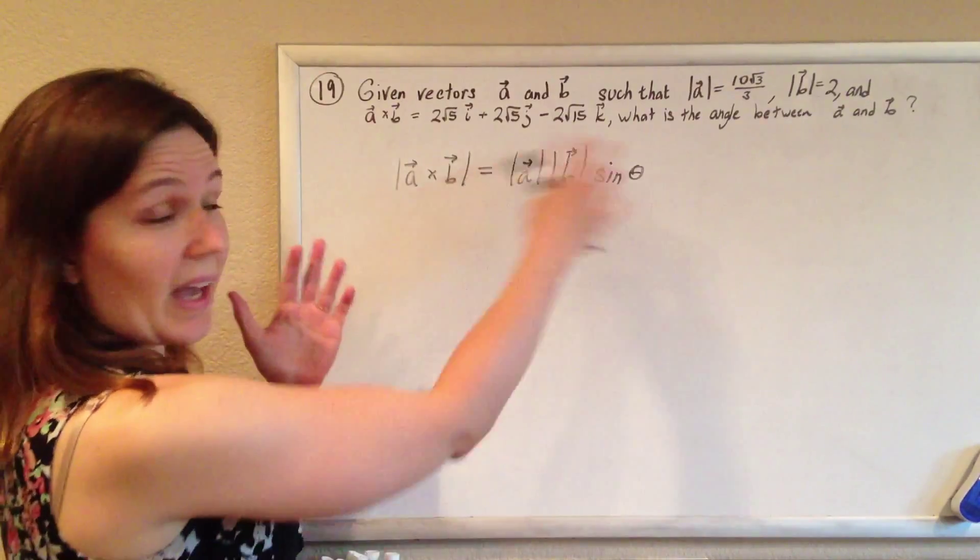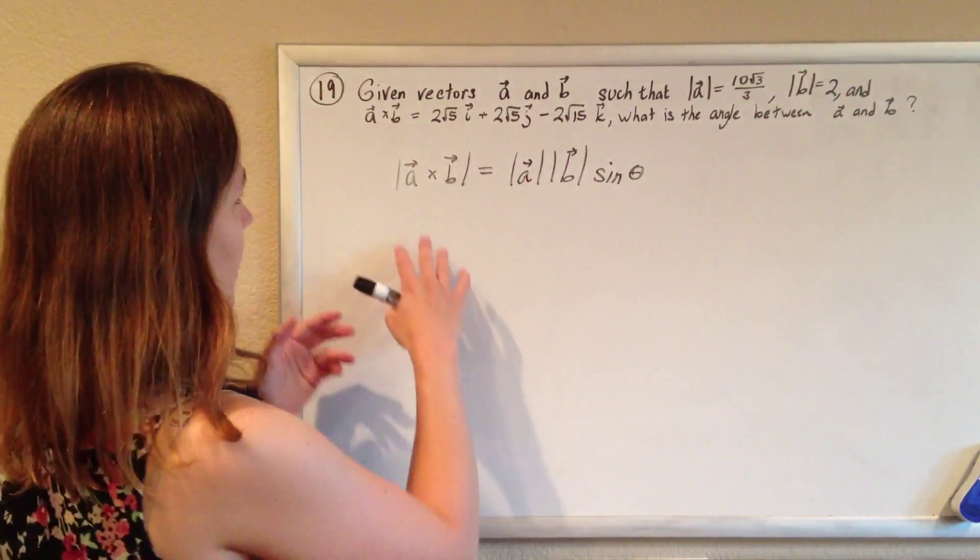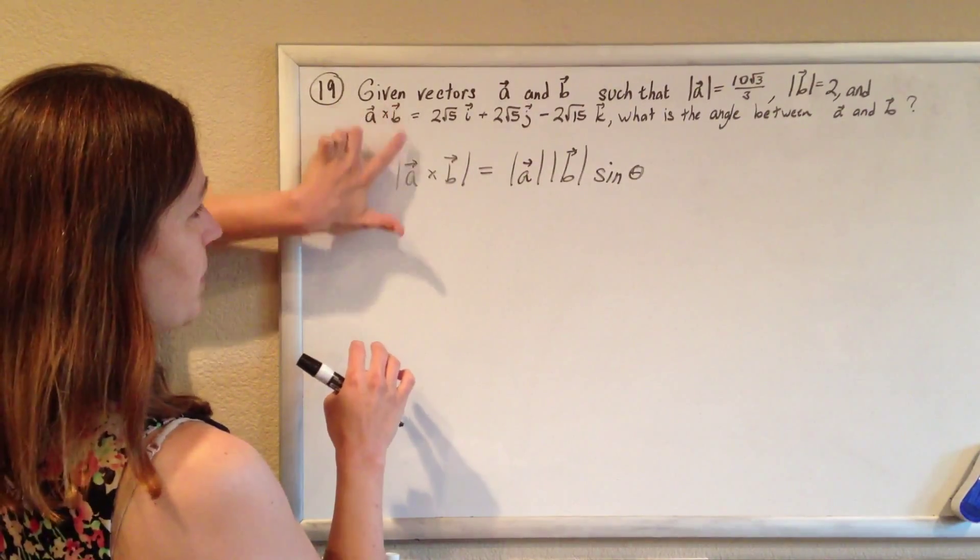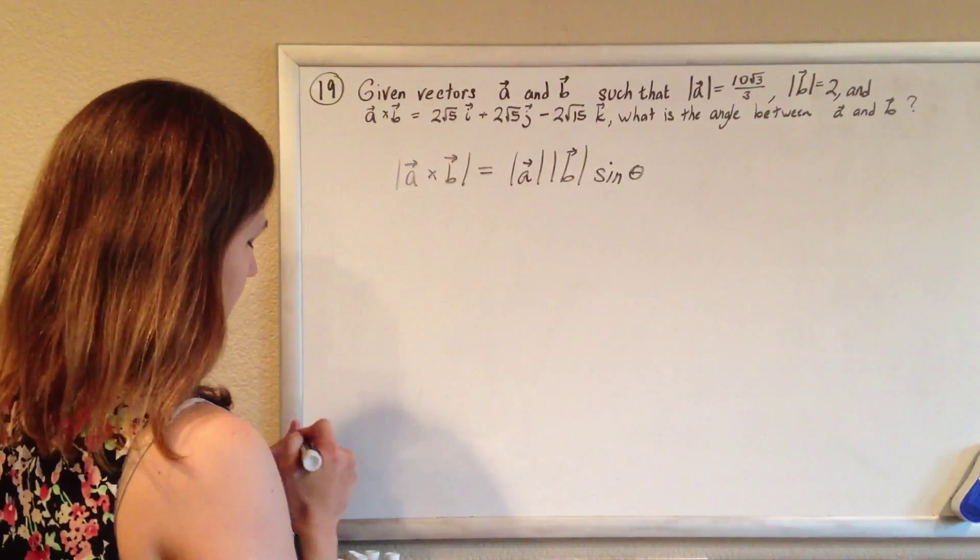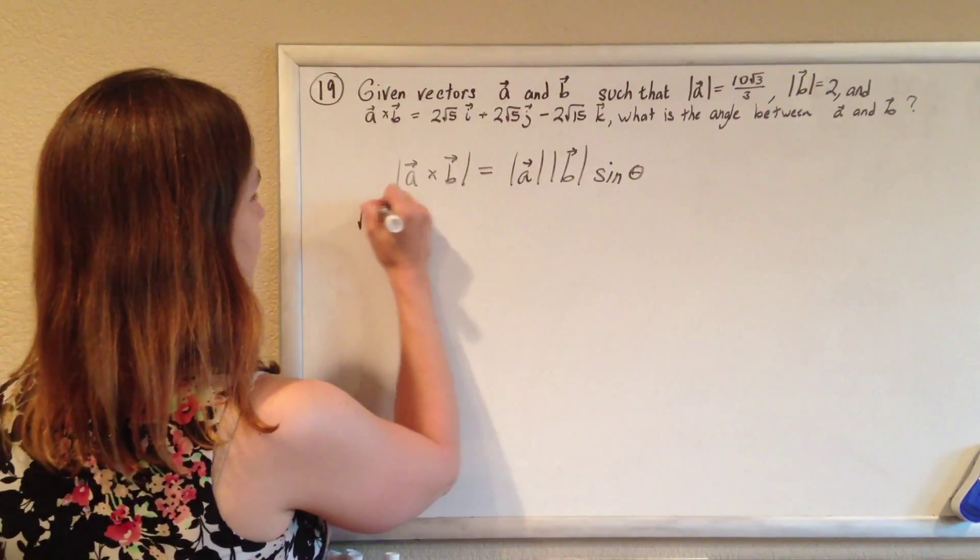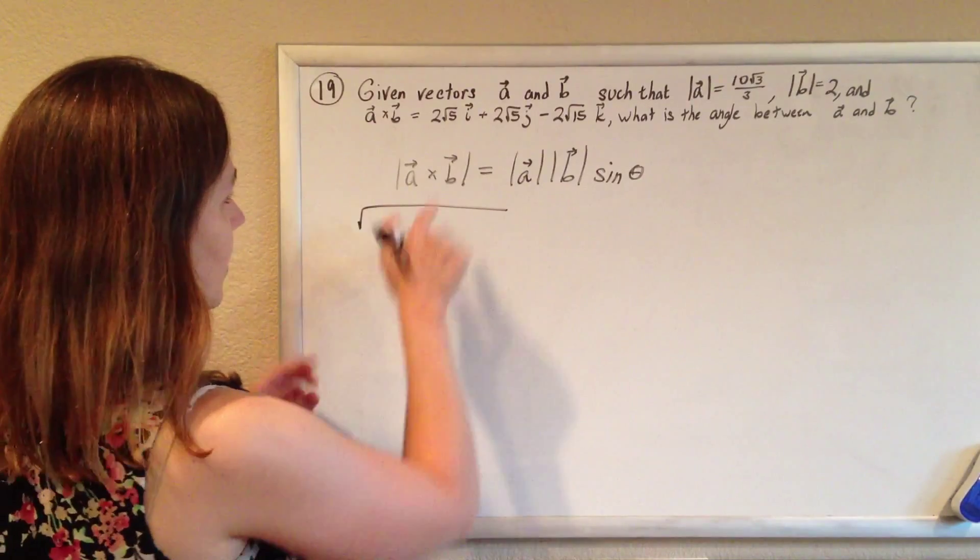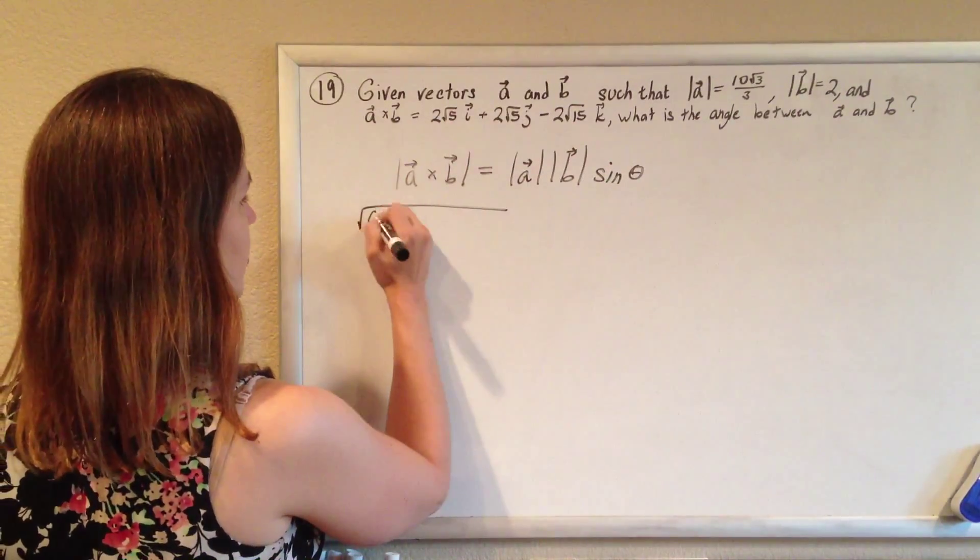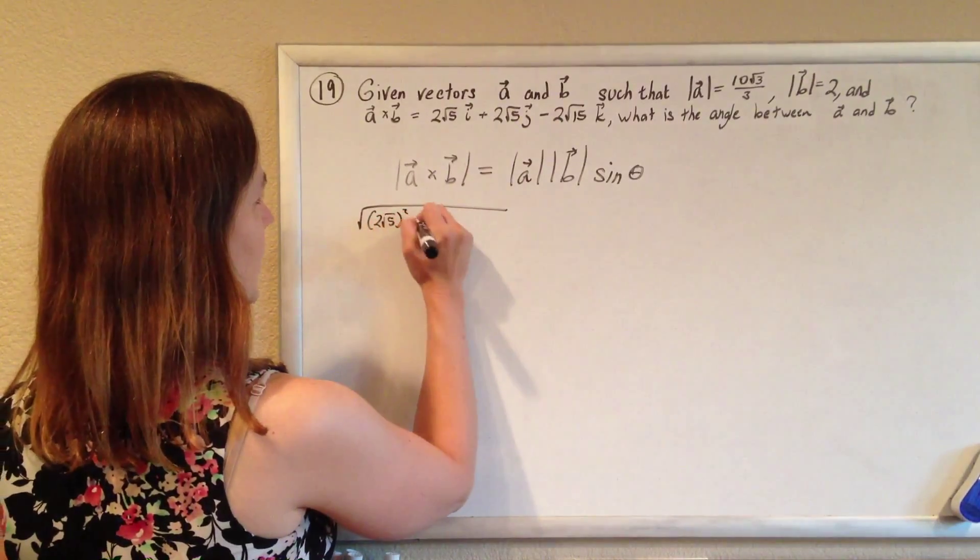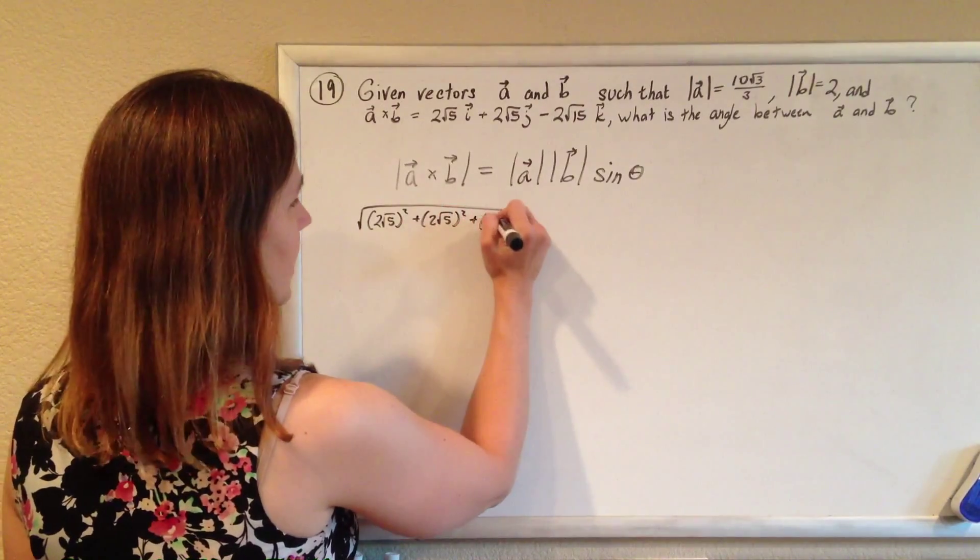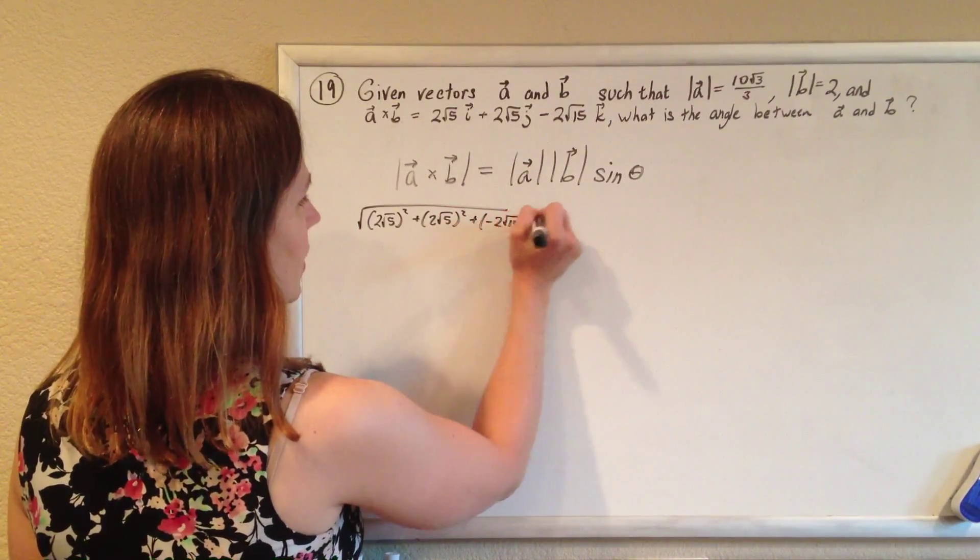Wonderful! We have all of those parts, right? We're given A cross B. We're not given the magnitude of it, but that's okay, we can find it. The magnitude of that is going to be the length of it, so like an extended Pythagorean, it's going to be 2 root 5 squared plus 2 root 5 squared plus negative 2 root 15 squared.